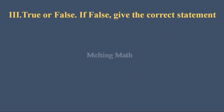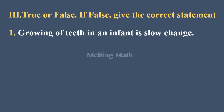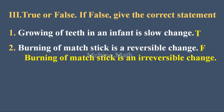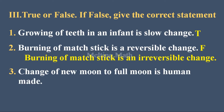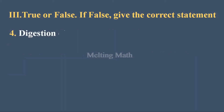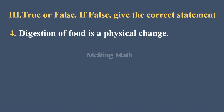Third section: True or False — if false, give the correct statement. Question one — growing of teeth in an infant is a slow change. True, because an infant (newborn child) takes a long time for teeth to grow, so it's a slow change. Question two — burning of a matchstick is a reversible change. False — burning of a matchstick is an irreversible change. Question three — change of new moon to full moon is a human-made change. False — it is a natural change.